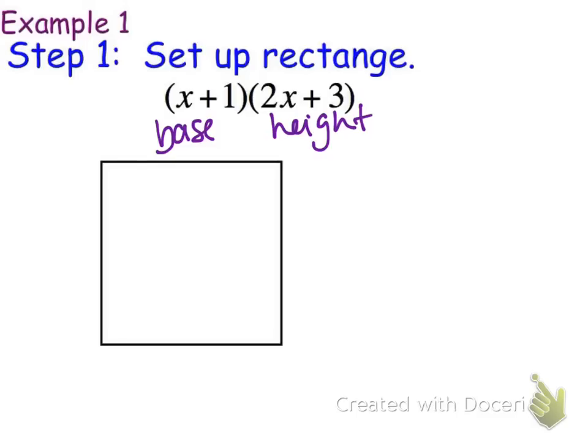So, the first thing that x plus 1, I'm going to set as the base of my rectangle. Now because it has two terms, now terms are things that are separated with plus or minus signs. Because it has two terms, I'm going to set up the base of my rectangle to have two pieces like that.